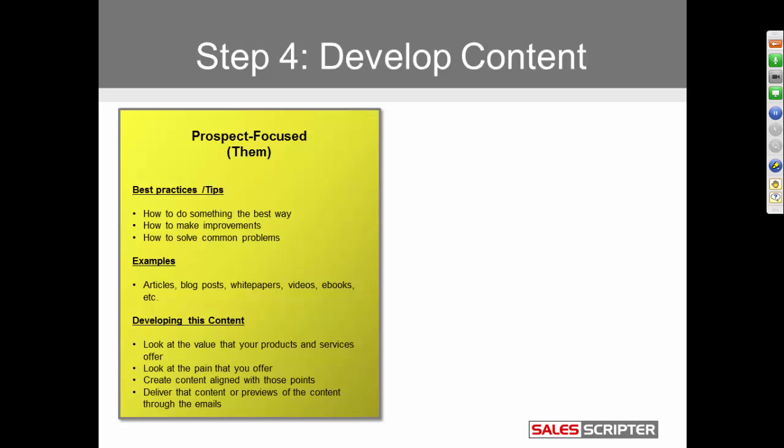Prospect-focused content is the type where you're sending tips and helpful information to your prospect. You might send them tips on how to do something, how to make something work better, how to make improvements, or how to solve common problems. Examples of what this content might look like: an article you've found on the internet or written yourself, a blog post, a white paper, a video, or an ebook. You can develop this content yourself or have it developed for you. You can send the whole piece of content through an email, or — more effectively — send a preview or promotion of the content.